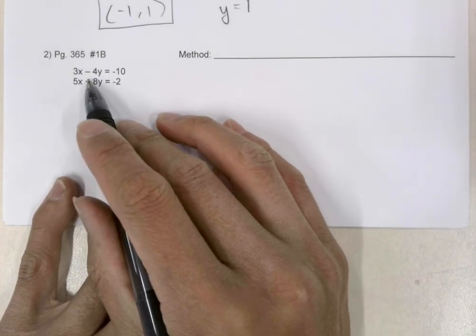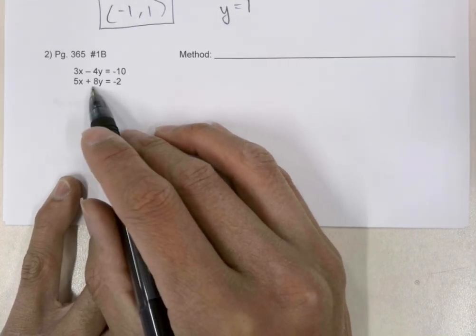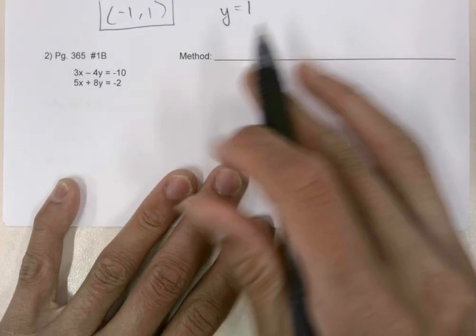In this problem, we have 3x minus 4y is equal to negative 10, and 5x plus 8y is equal to negative 2.